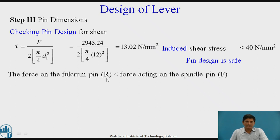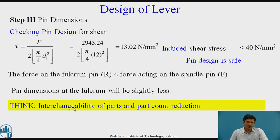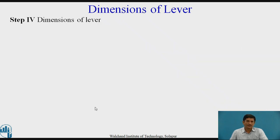The forces on the fulcrum pin, the R, it is less than the force acting on the pin at spindle. Hence, we can say that pin dimension at the fulcrum will be slightly less. But, you know that. You can think upon this. What is the interchangeability and how interchangeability and parts, part count reduction are related. You have taken diameter of the pin at R equals diameter of the pin at F.